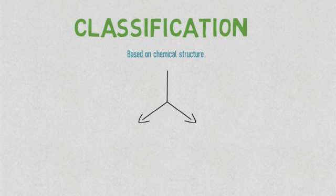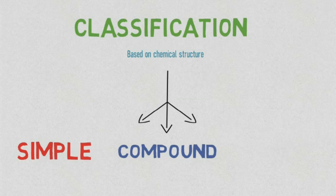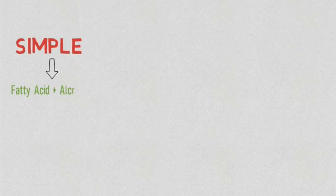Lipids can be classified based on their chemical structure into simple, compound, or derived lipids. Simple lipids are made of fatty acid and alcohol only. Examples include fats, oils, and waxes.